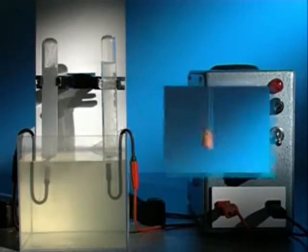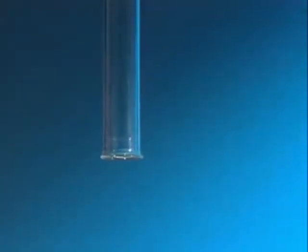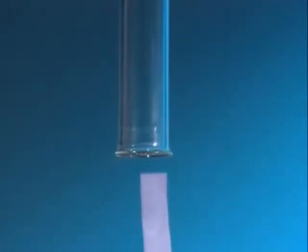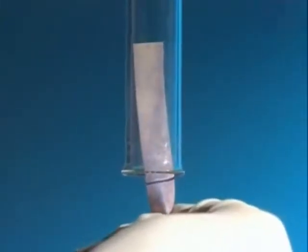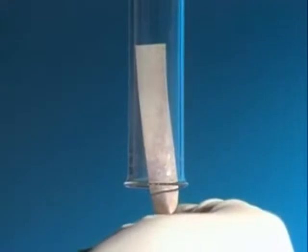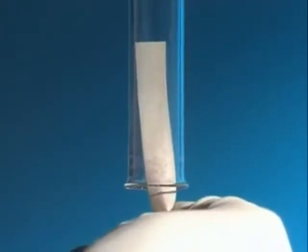The gas collecting at the positive electrode is tested with damp blue litmus paper. It goes red and quickly bleaches white. The gas is chlorine.